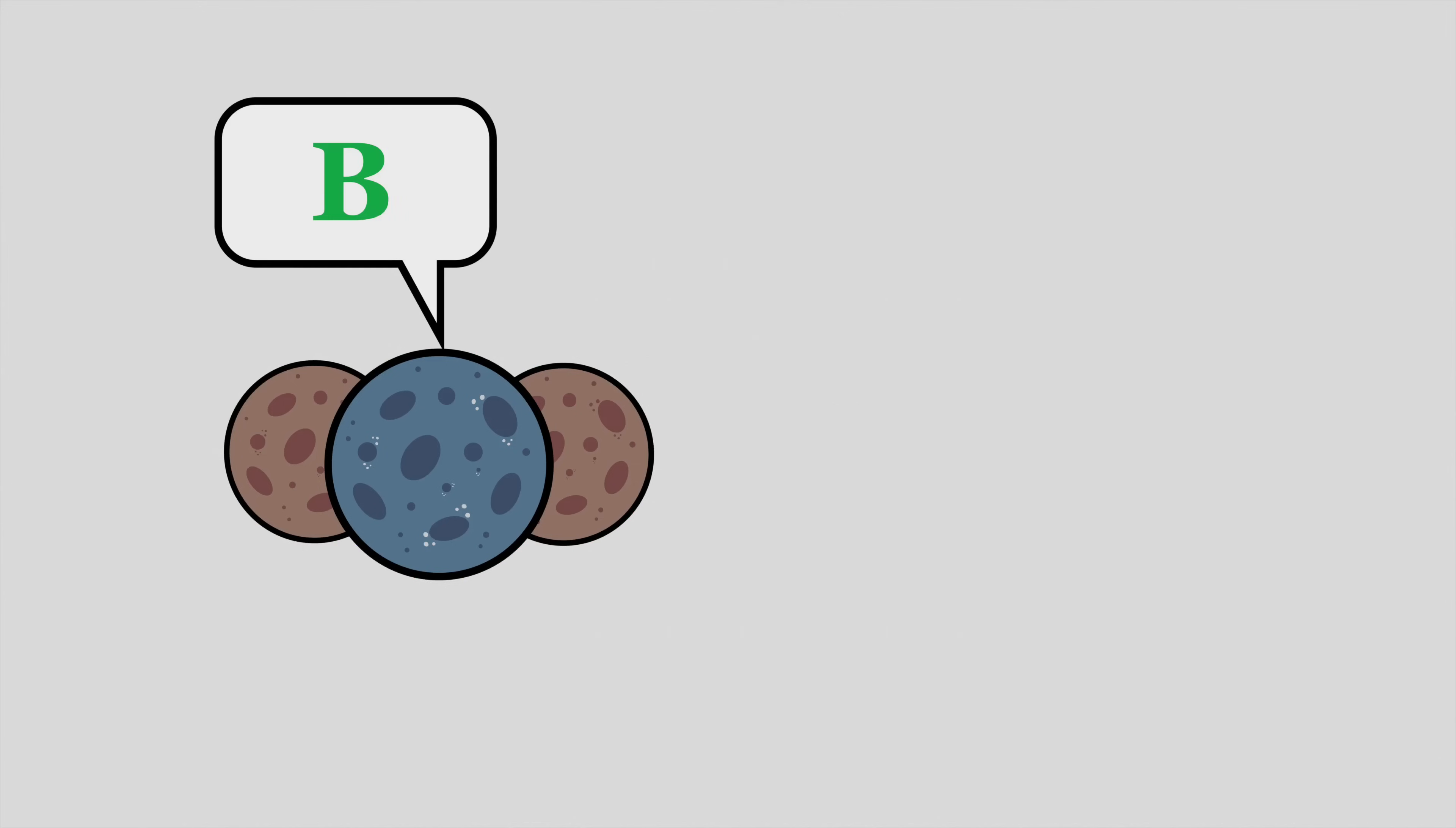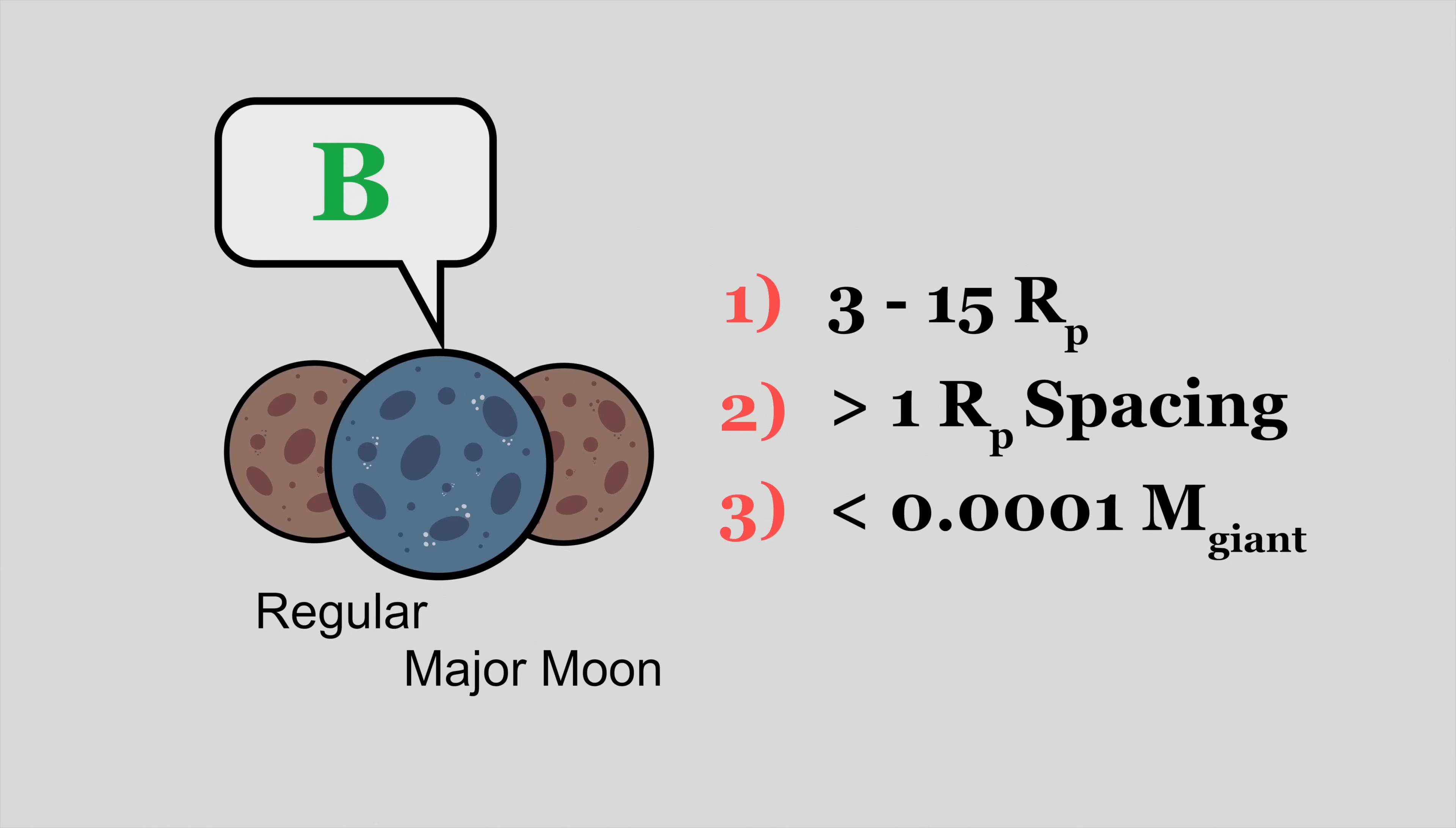The second group, the B group, will be a satellite system's main group, featuring a handful of large, regular, major moons. Some rules here. 1. Their domain lies between about 3 and 15 planetary radii out from the gas giant's center. 2. No two major moons should come within one planetary radius of each other. And 3. Their mass should be less than 0.0001 times the mass of the giant planet.